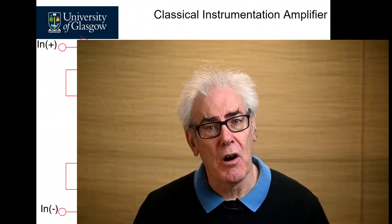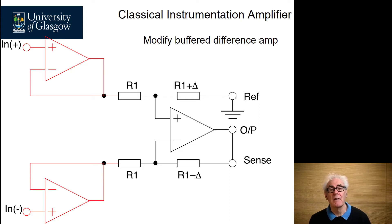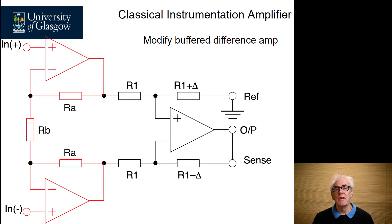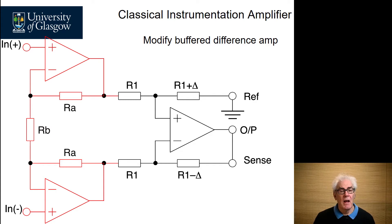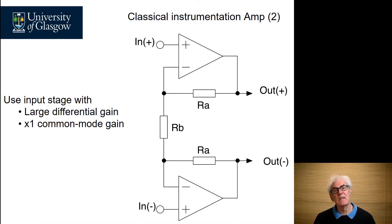In this lecture, we're going to look at how we can improve the performance of an instrumentation amplifier by modifying the design of the input difference amplifier to give us additional gain. If we place some resistors around the input amplifier, we can actually increase the gain of the overall instrumentation amplifier. The resistors are called RA and RB and are arranged symmetrically around the buffer amplifier at the input of the block.